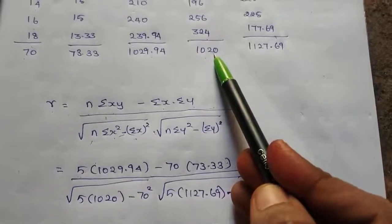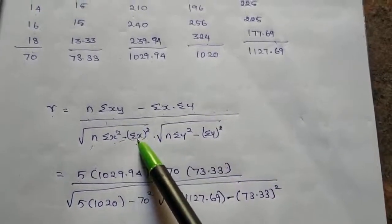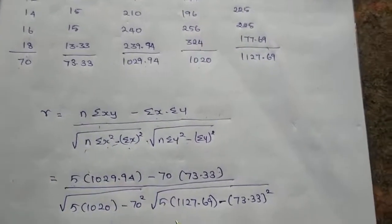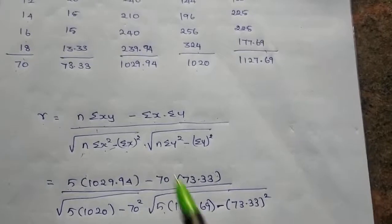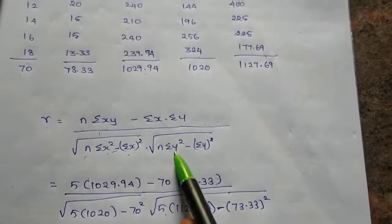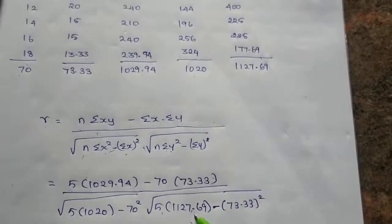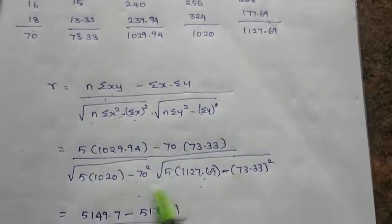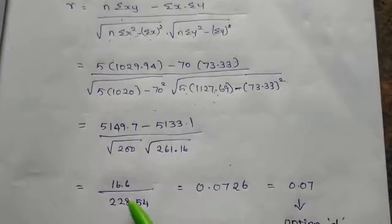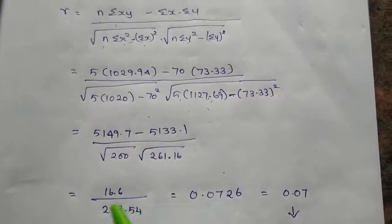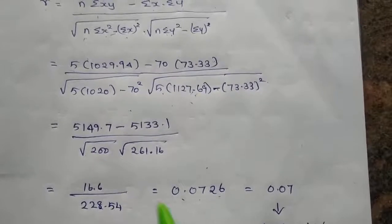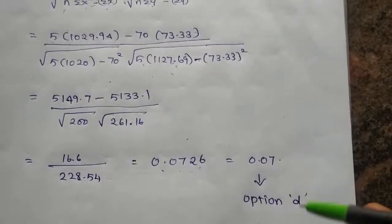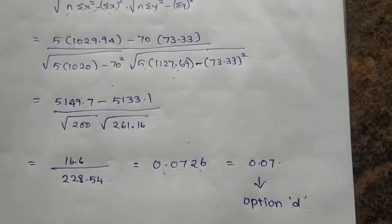Summation X square value is 1020, then summation X whole square, 70 whole square value. Y square value, summation Y square value minus summation Y whole square value, substitute by root of N value, and we get the answer.